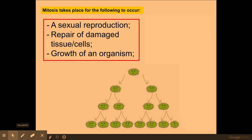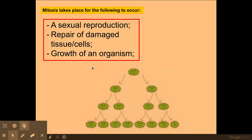The significance of mitosis — why we need it — is that it's used for asexual reproduction, whereby an organism such as bacteria would produce many copies of itself without the use of a partner. It's also used for repairing damaged tissues and cells, and for the growth of an organism.